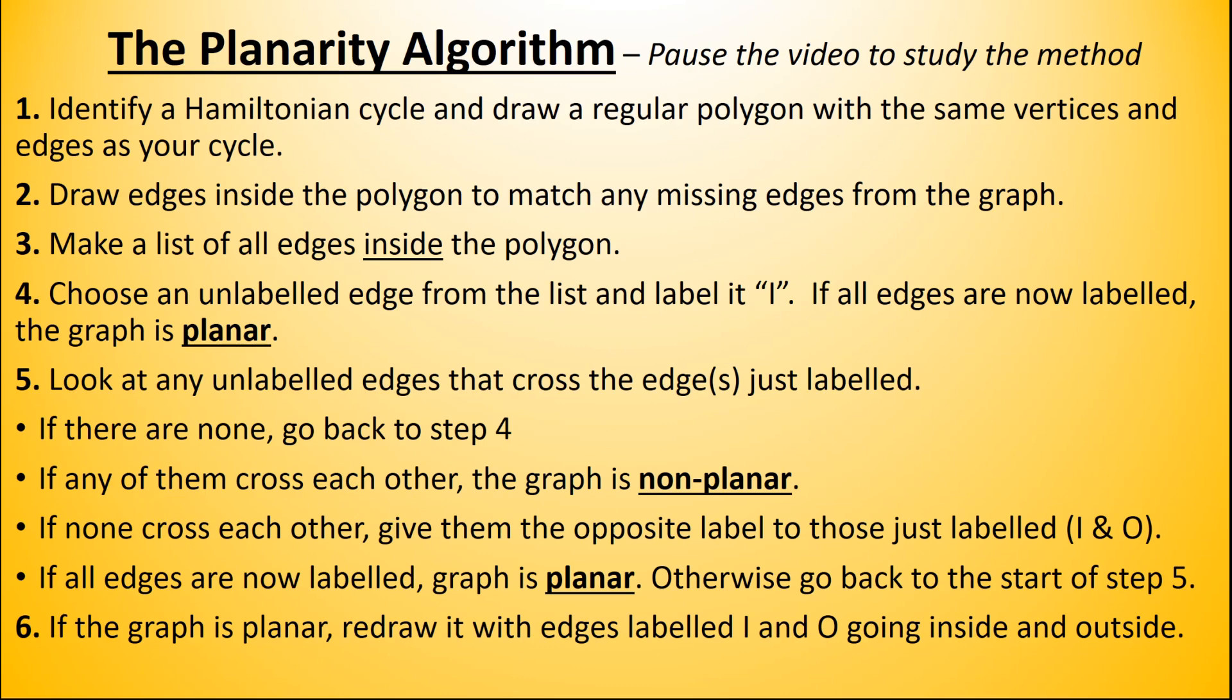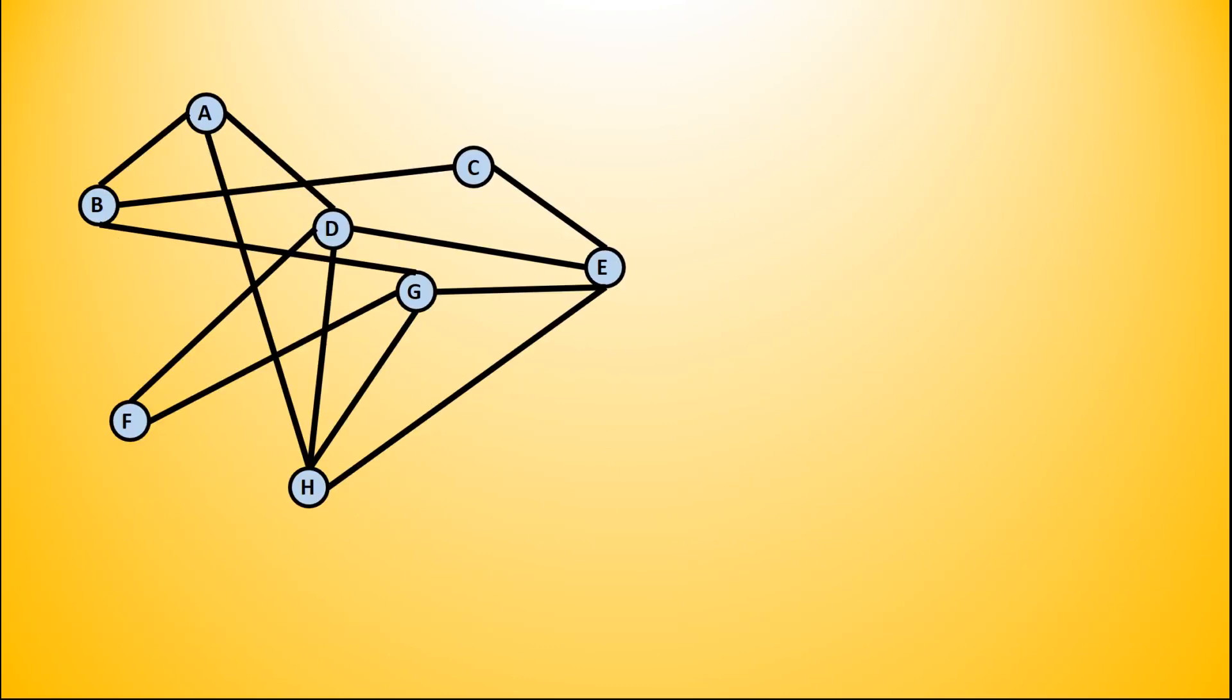Here is a graph that we wish to find out whether it is planar or not. The first stage is to find a Hamiltonian cycle - that is, a series of edges that connect to each other, starting and finishing in the same place and going through every vertex.